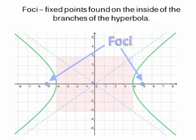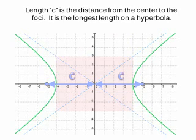Remember that the definition of a hyperbola is the set of all points in a plane where the difference between two fixed points is a constant. The two fixed points in the definition are called foci. The foci lie on the inside of each branch of the hyperbola. Length c is the distance from the center to one of the foci. It is the longest length on the hyperbola. Perhaps you can see that length c is also the distance from the center to the corner of the reference box.